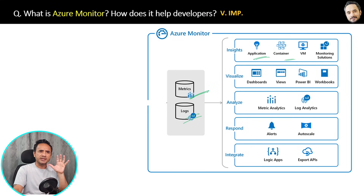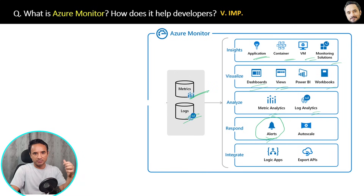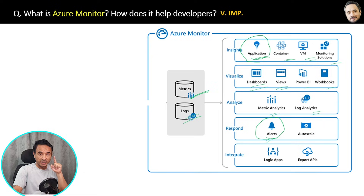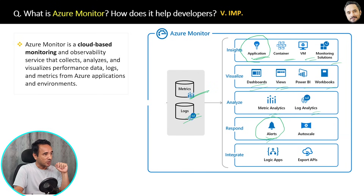Azure Monitor has many tools inside it — dashboards, views, Power BI, analytics, and more. For example, if there are any errors you can create alerts so that if there is an error in the production application, an email alert will be generated and sent to the developers. The most important tool inside Azure Monitor is Application Insights, which is used to analyze network errors and all kinds of errors.